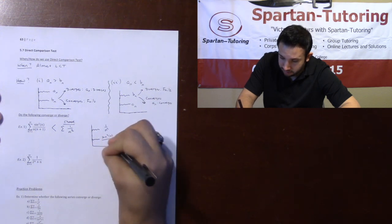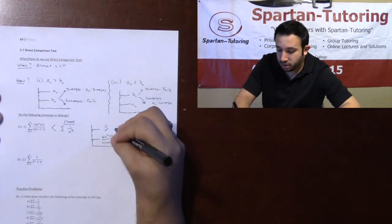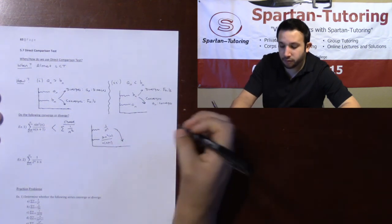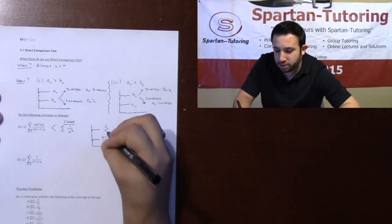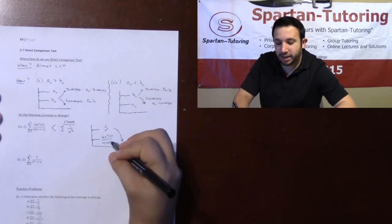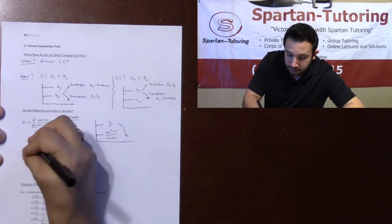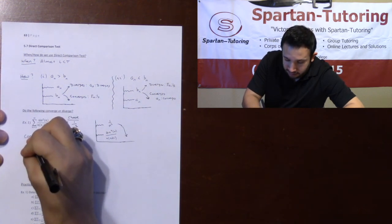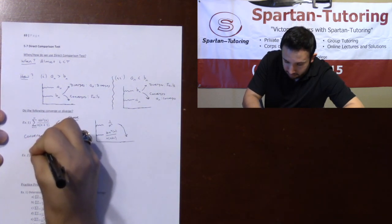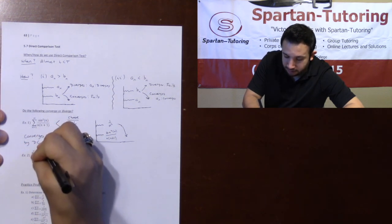Going back to p-series, we know for a fact that one over N squared converges. And because one over N squared converges and is bigger, this series has to converge as well. So number one converges by the direct comparison test.